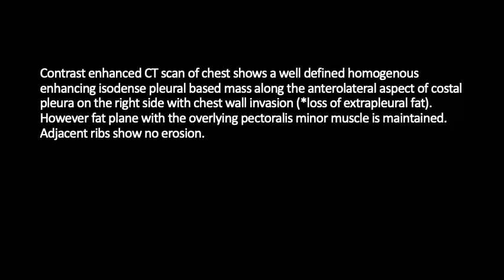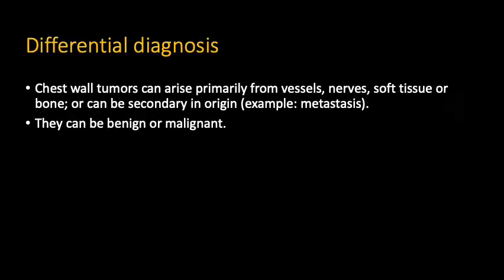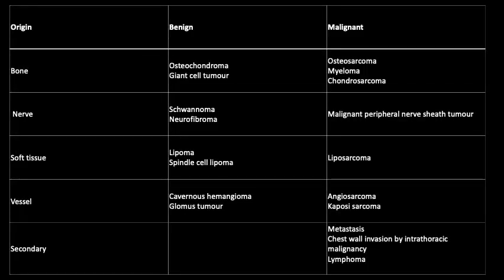The differential diagnosis for chest wall tumors includes those arising from any component. Bony tumors include benign types such as osteochondroma and giant cell tumor, and malignant types such as osteosarcoma, myeloma, and chondrosarcoma.